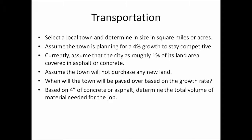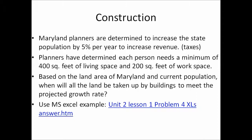In the Construction Problem category, planners are determined to increase the state population by 5% per year to increase tax revenue. Planners have determined each person needs a minimum of 400 square feet of living space and 200 square feet of work space. Based on the land area of Maryland and current population, determine when all the land will be taken up by buildings to meet the projected growth rate. Use the MS Excel example from Unit 2 Lesson 1.